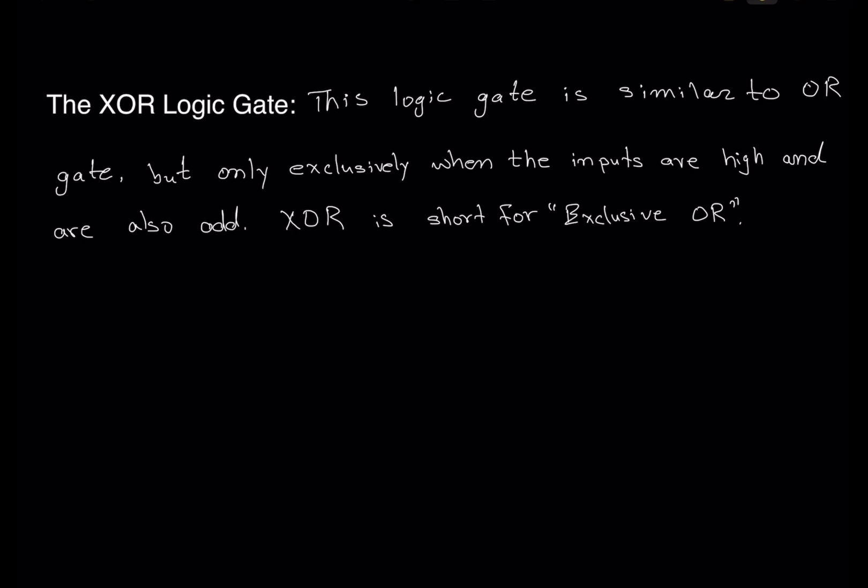This logic gate is similar to the OR gate, but only exclusively when the inputs are high and are also odd. In the OR logic gate, if you had a two-input gate, if one input was high, or both of them were high, the output would be high. But in this case, with the XOR gate, the output will only be high if we have an odd number of inputs high. So for a two-input logic gate, if one input is high the output will be high, but if both inputs are high the output will be low.